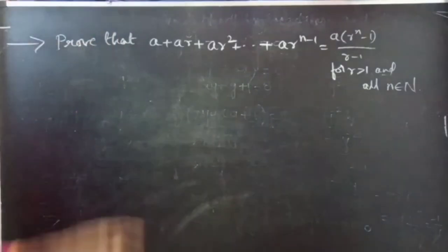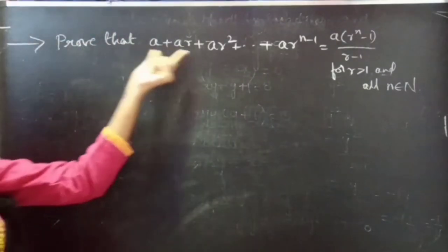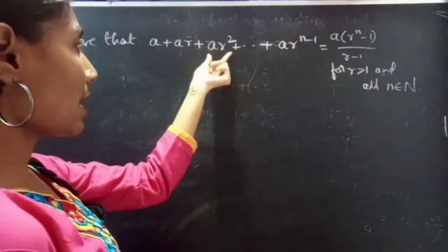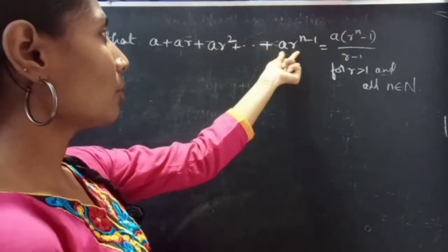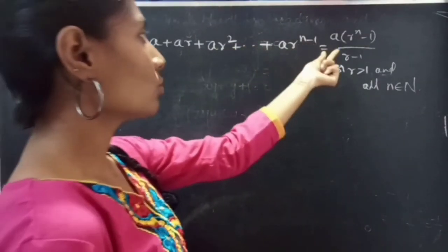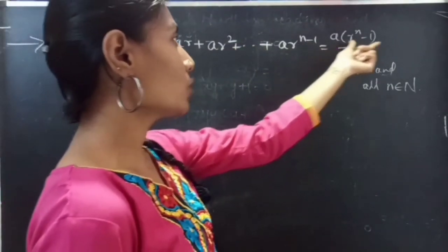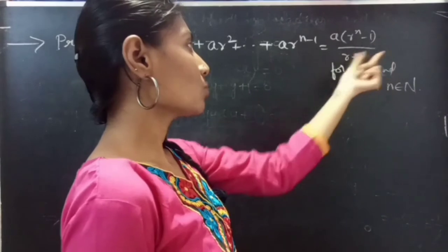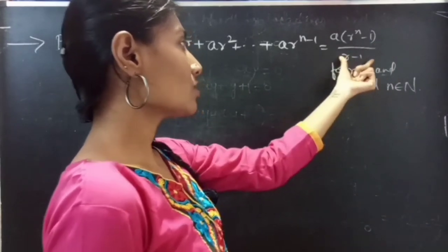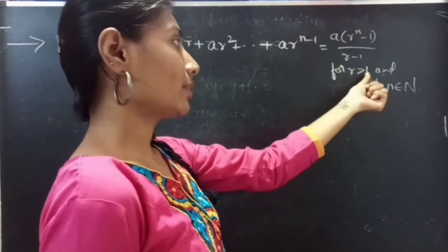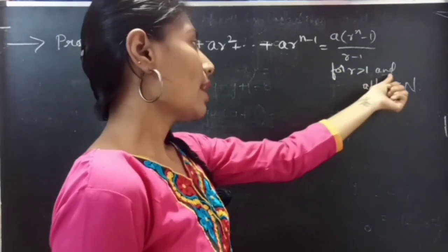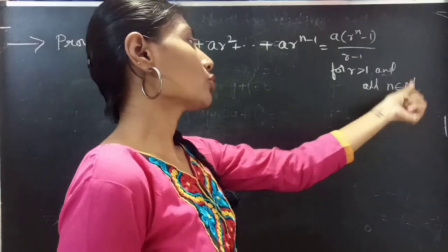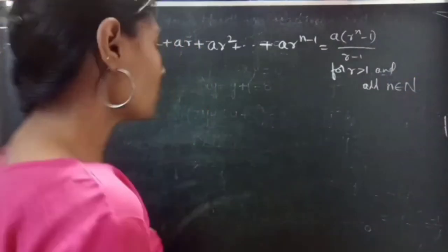Problem: prove that a plus ar plus ar squared plus ... plus ar to the power n minus 1 equals a times (r to the power n minus 1) divided by (r minus 1), for r greater than 1 and all n belonging to natural numbers.